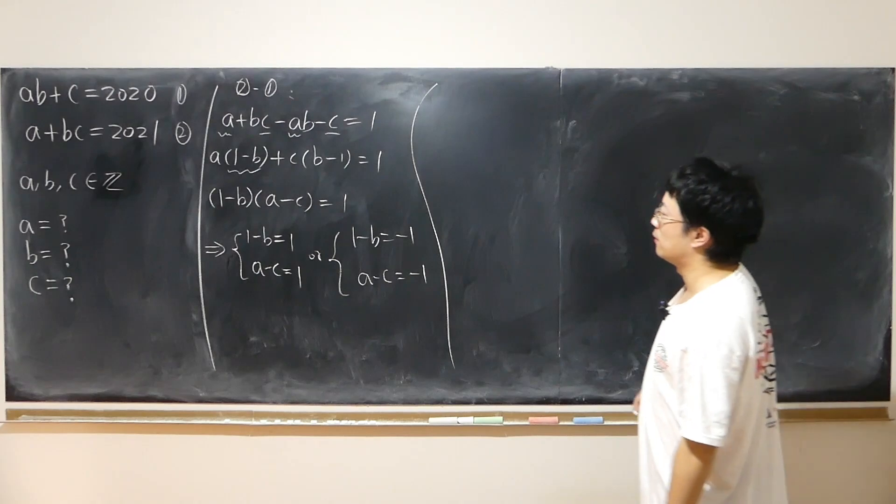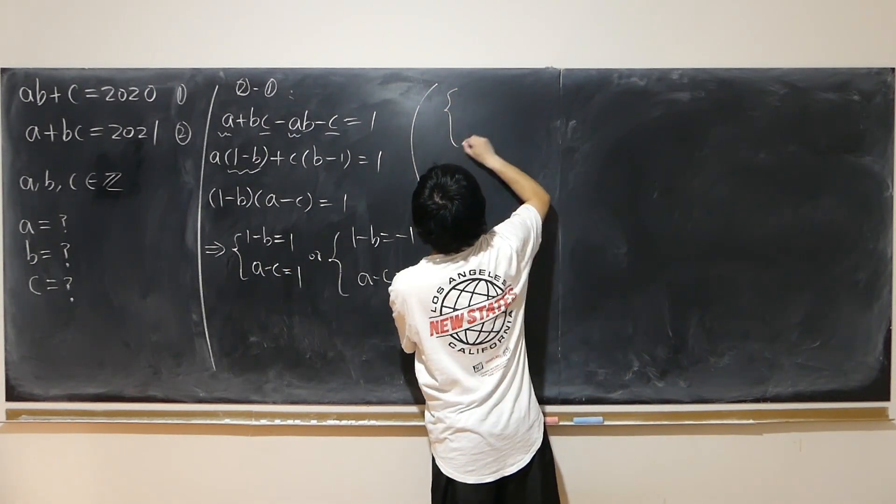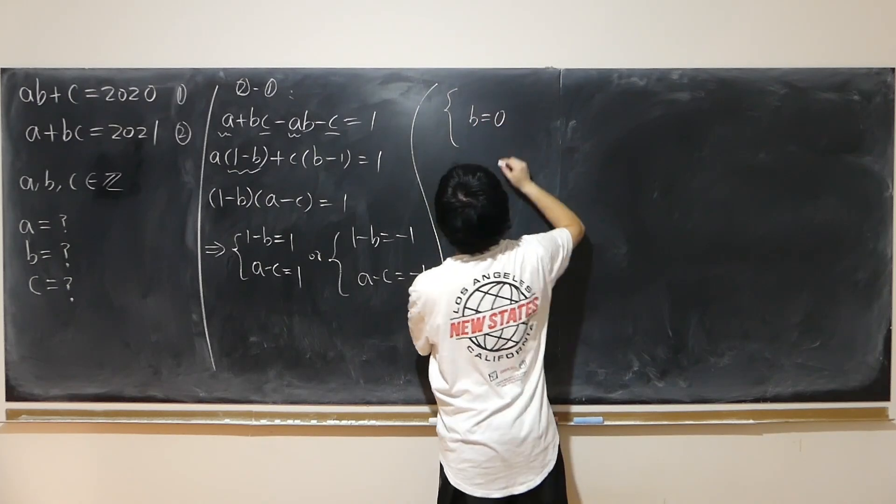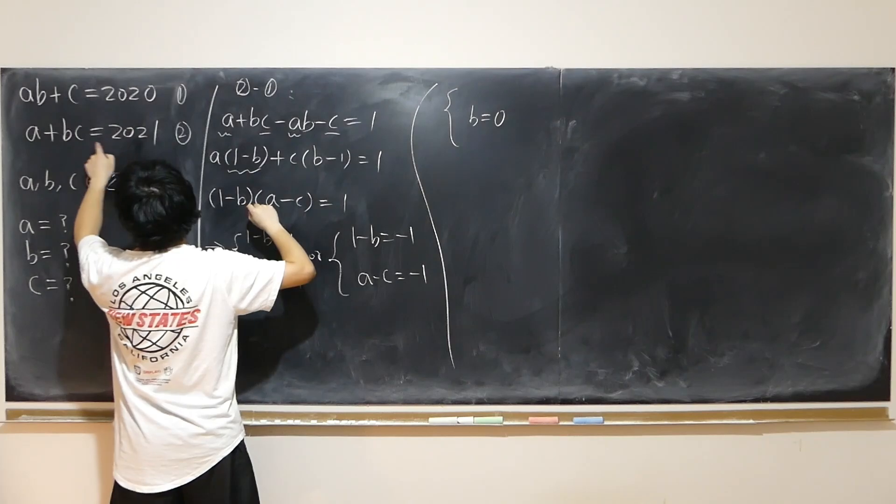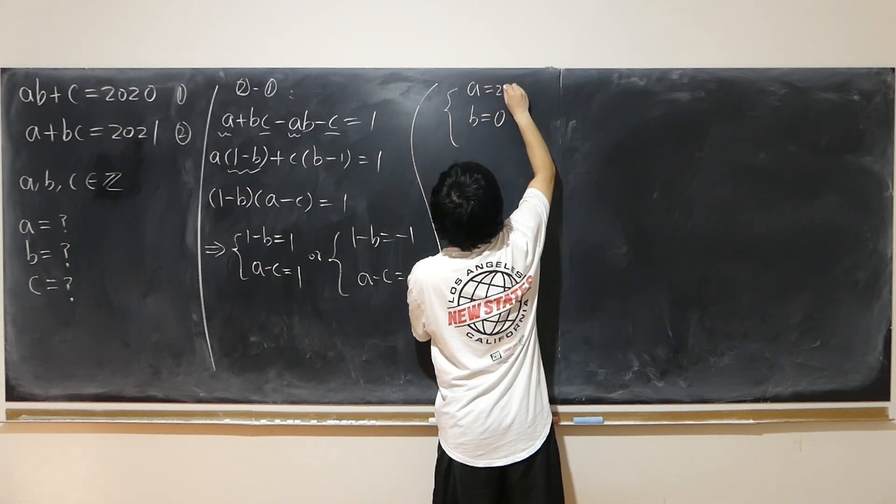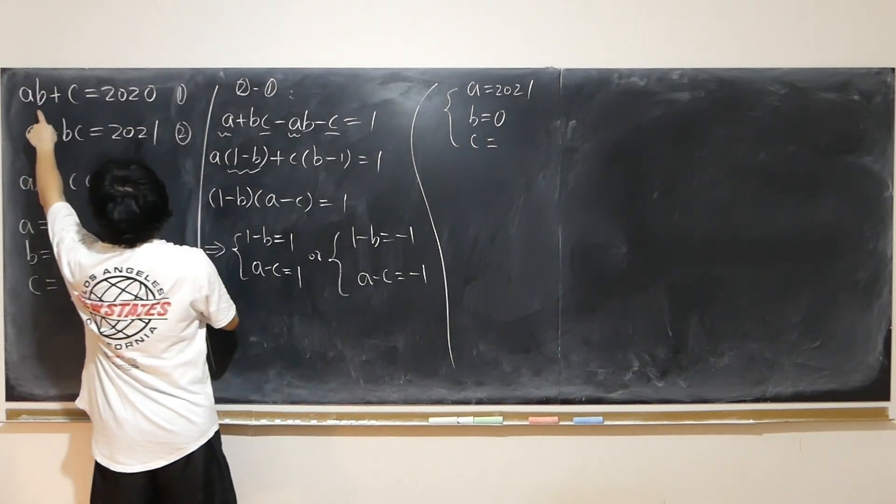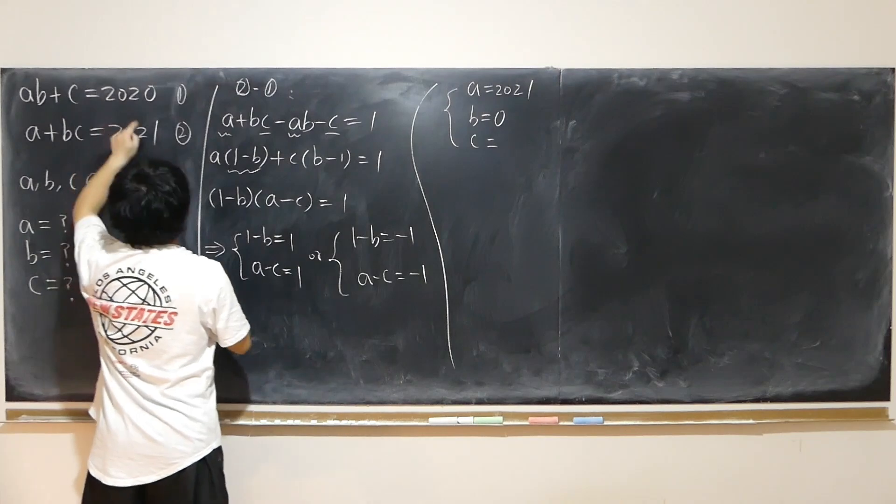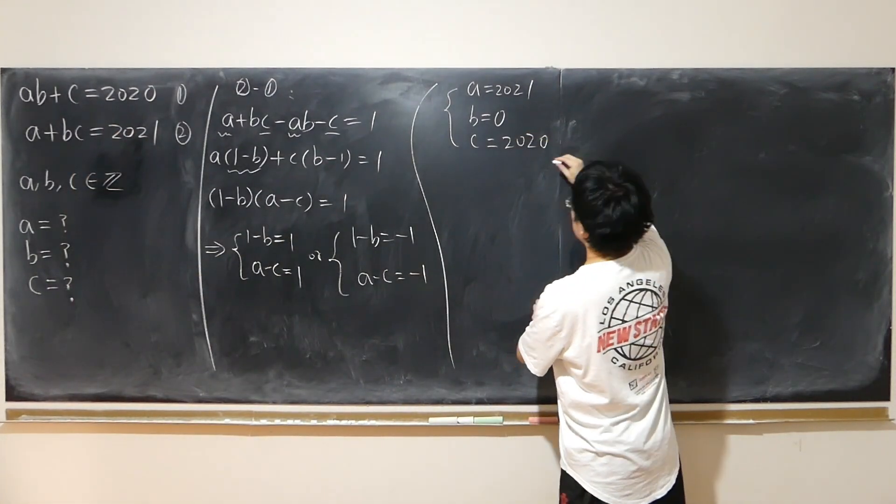So first case scenario, I have b equals 0. Now, if b equals 0, I have a plus 0 equals 2021. So a is equal 2021. And c is equal, similar. So 0 plus c equals 2020. So c equals 2020. That's the first possibility.